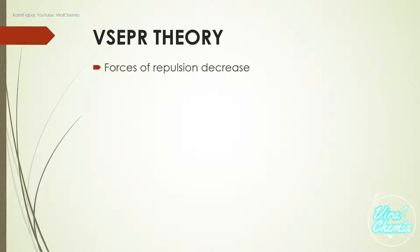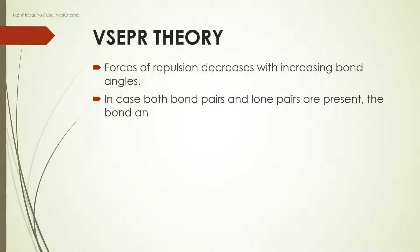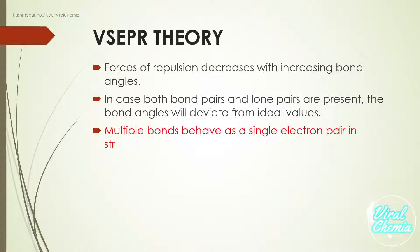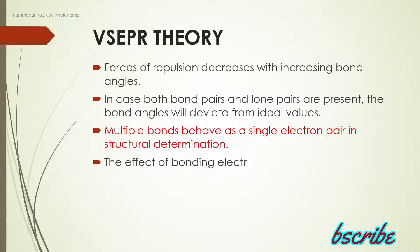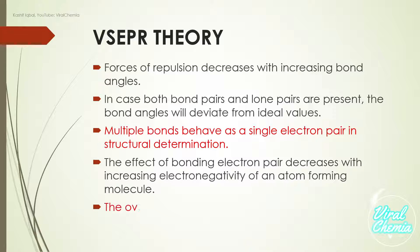Forces of repulsion decrease with increasing bond angles. In cases where both bond pairs and lone pairs are present, the bond angles will deviate from ideal values. Multiple bonds behave as single electron pairs in structural determination. The effect of bonding electron pairs decreases with increasing electronegativity of an atom forming the molecule.